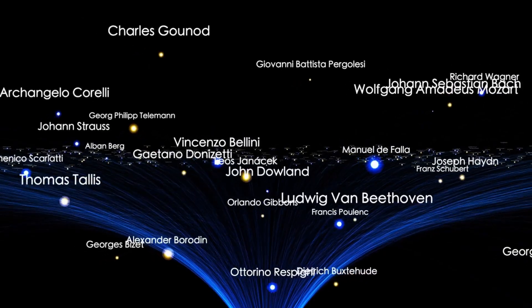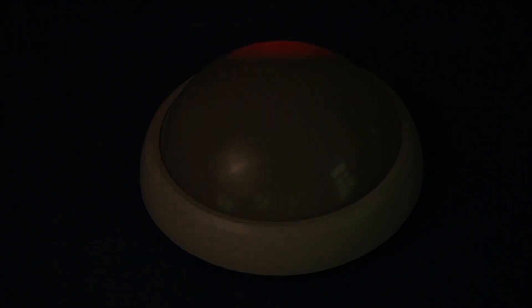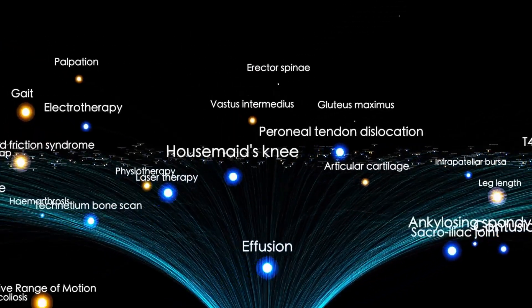Then, without warning, every observatory tracking 3.I Atlas went dark. In less than 10 minutes, telemetry from Hawaii, Chile, Italy, and South Africa simultaneously froze. The deep space network lost contact. Even China's radio arrays reported total silence across multiple frequencies.